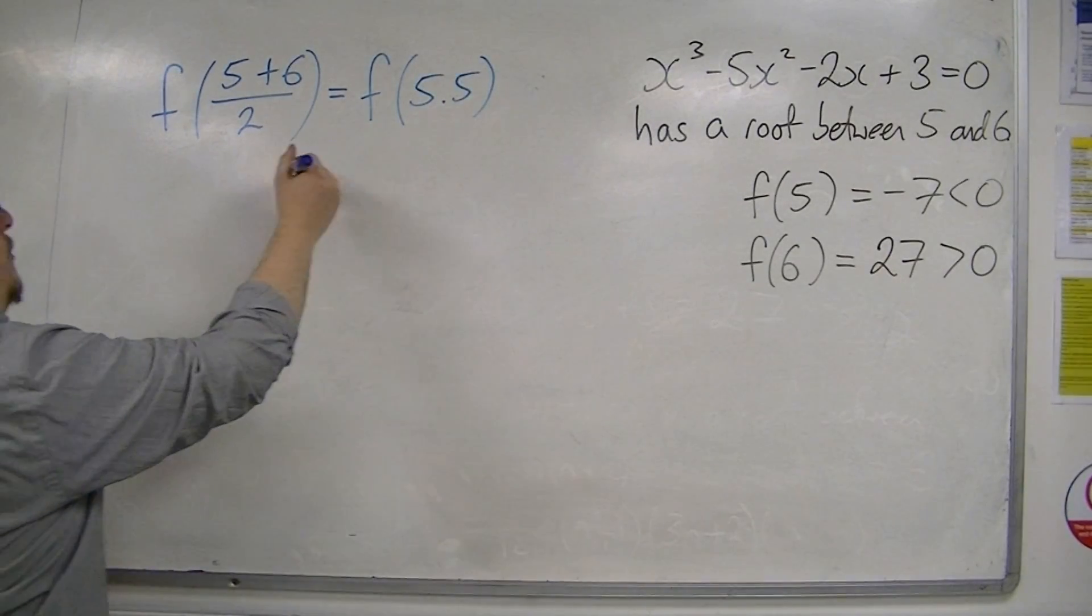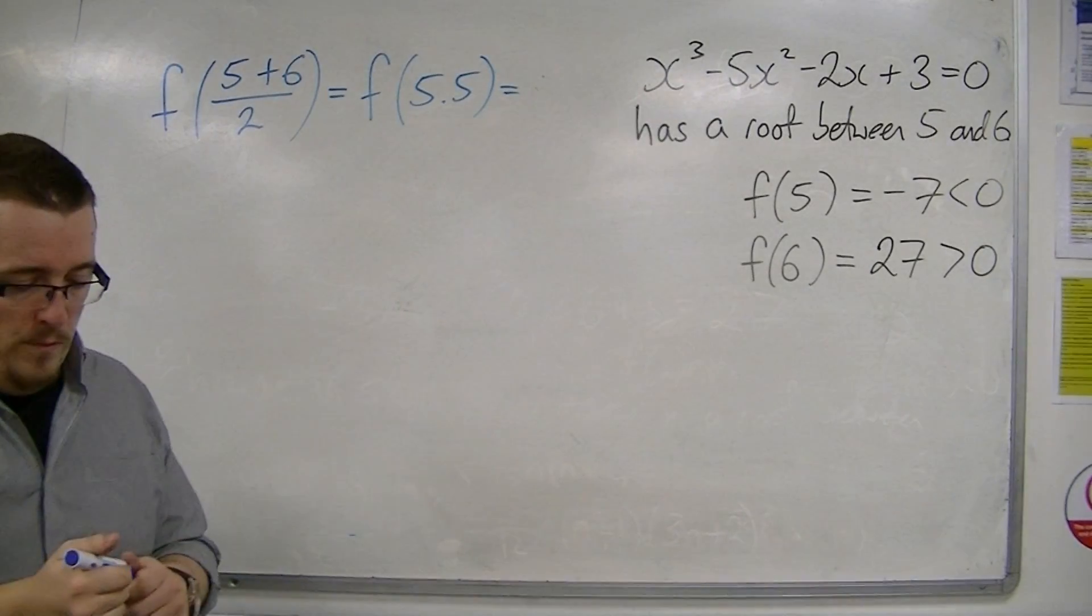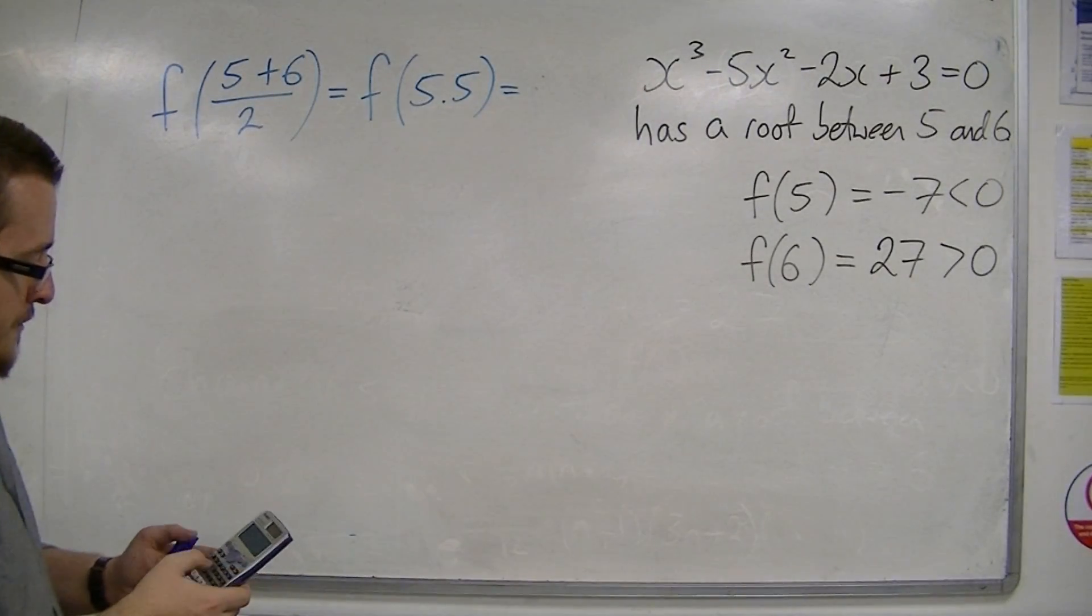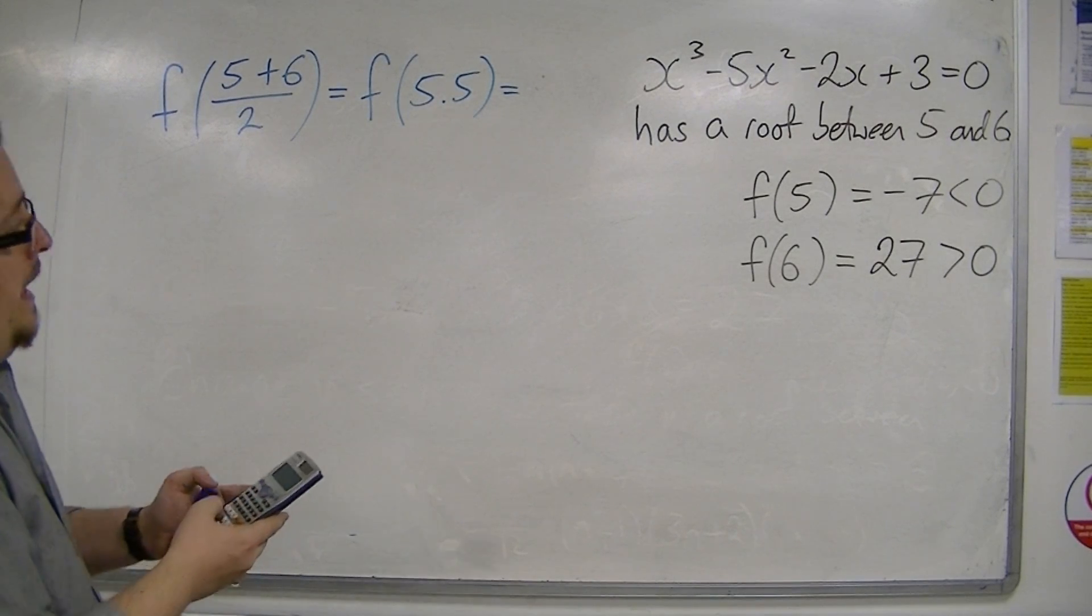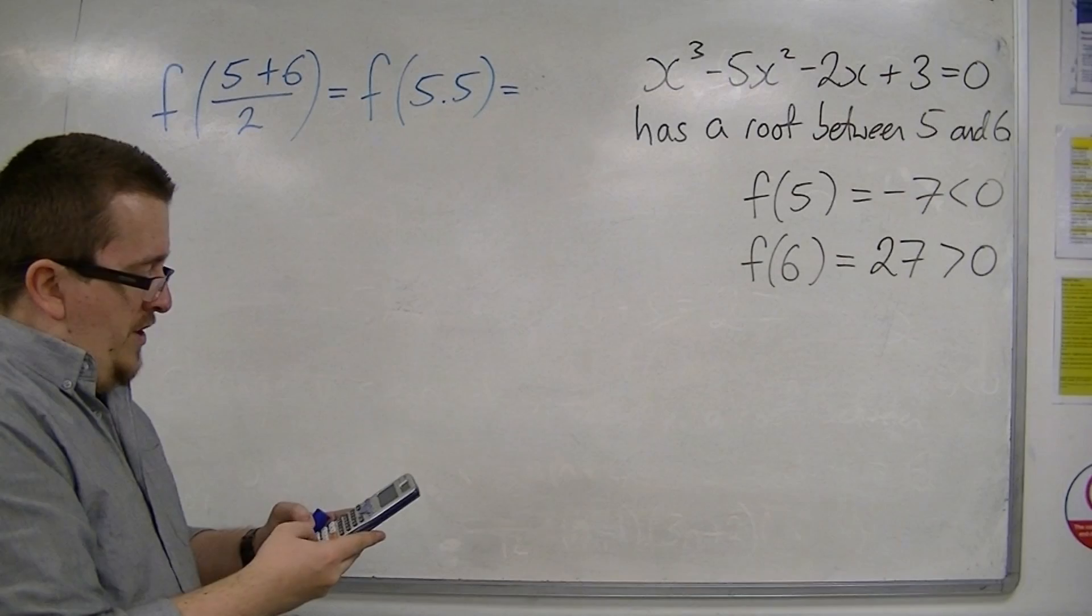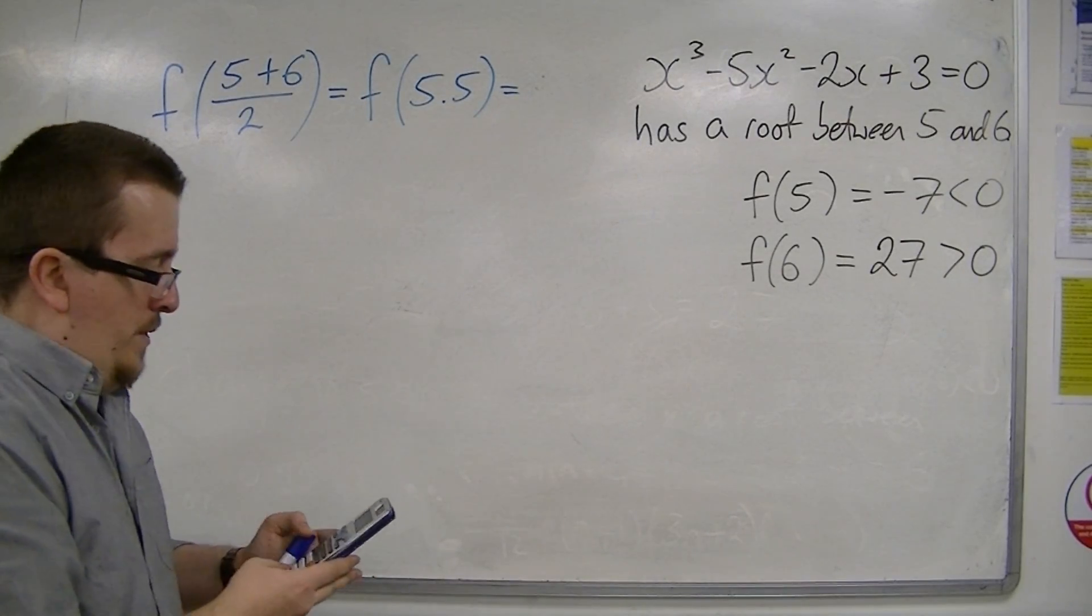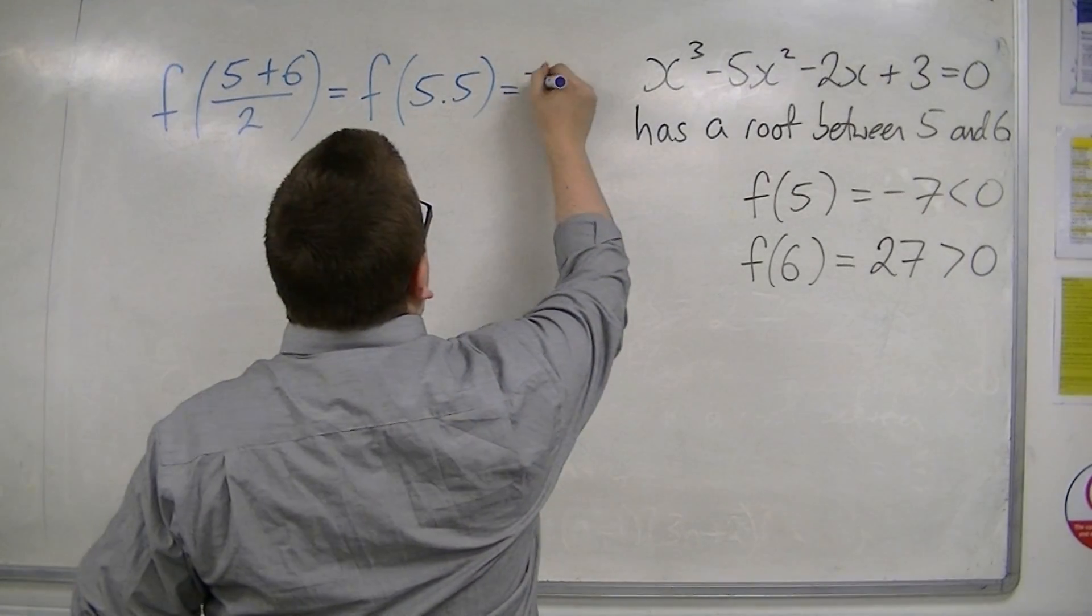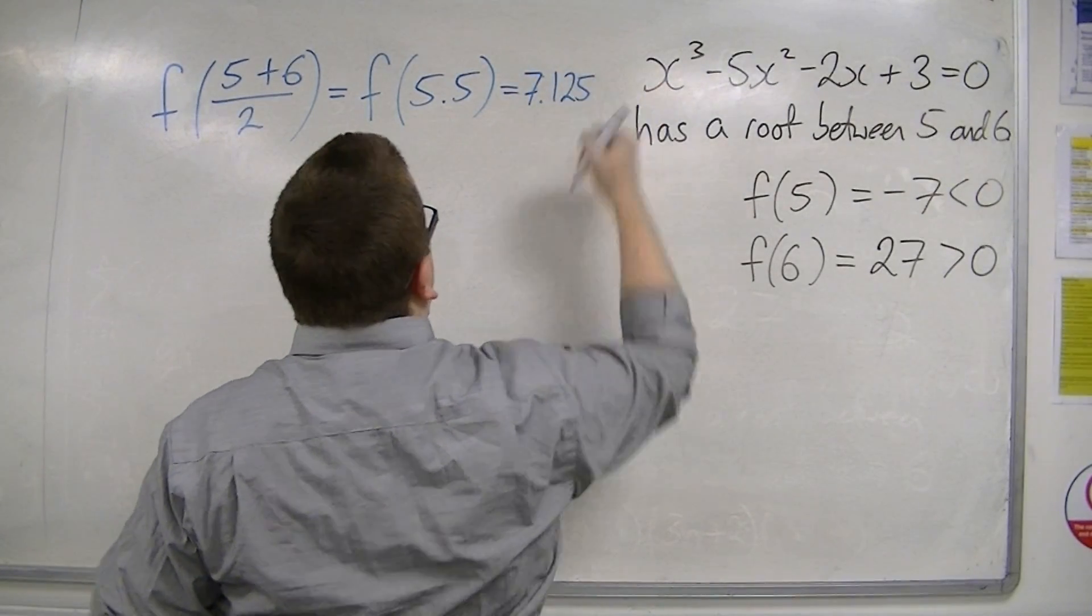So we'd find f of 5.5 by plugging it into our calculator. So 5.5 cubed, take away 5 times 5.5 squared, take away 2 times 5.5 plus 3. And we get 7.125.